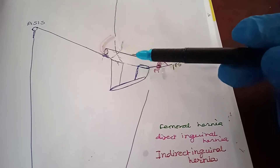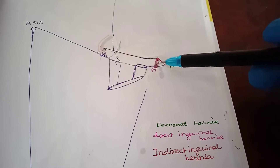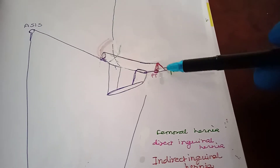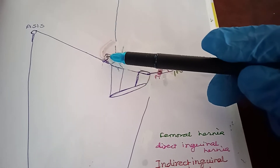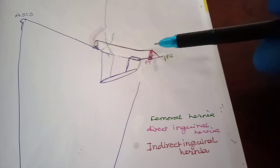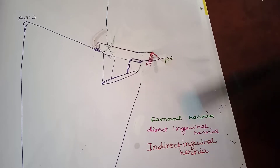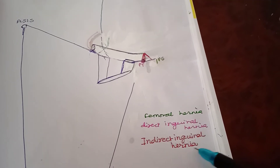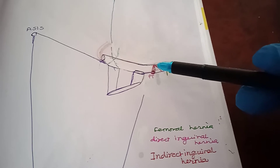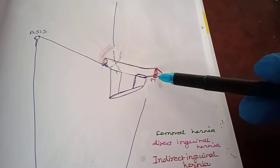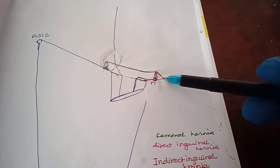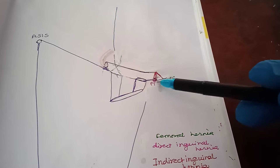When it comes out through the superficial inguinal ring it is complete indirect inguinal hernia. Practically, we take the complete form as indirect inguinal hernia, so the neck of indirect inguinal hernia is the superficial inguinal ring. The superficial inguinal ring has two limbs or crura: the lateral crus attached to the pubic tubercle, the medial crus attached to the pubic crest, and the floor formed by the reflected part of the inguinal ligament or lacunar ligament.